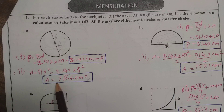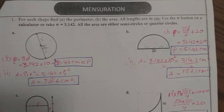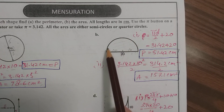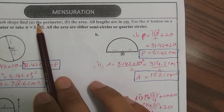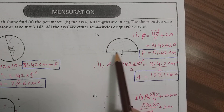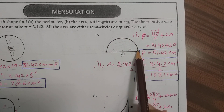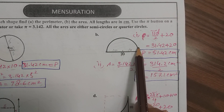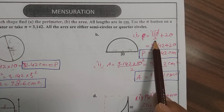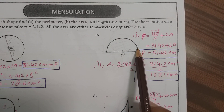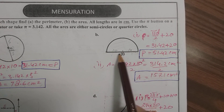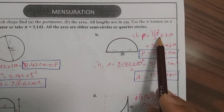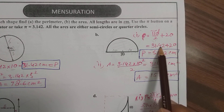In part b we are given a semicircle. We need to find the perimeter — the outer boundary — which includes the curved part and the straight edge. The curved part is half the circumference, so pi d divided by 2. The straight edge is 20. Adding the curved part and the straight edge gives the perimeter of the shape. Simplifying, you get 51.42 centimeters.